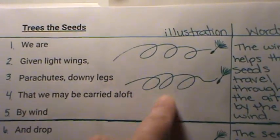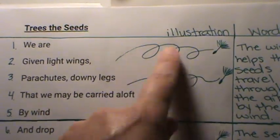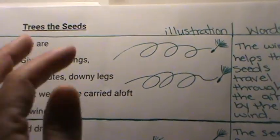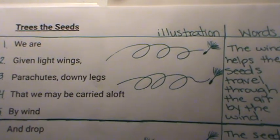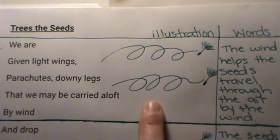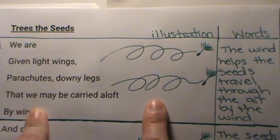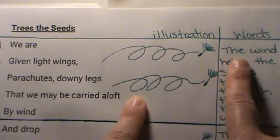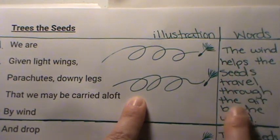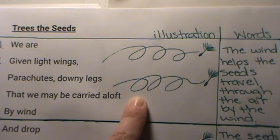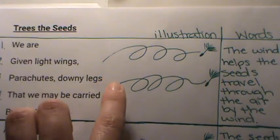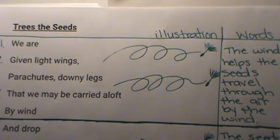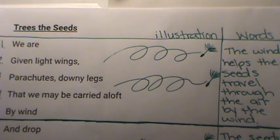These five lines are about that seed still moving. I drew something like the wind carrying those seeds and moving them to different places. That's my illustration, and then my sentence to explain what I think is happening. I said: the wind helps the seeds travel through the air. I had repeated 'by the wind' so I removed that — the cleaner version is: the wind helps the seeds travel through the air.